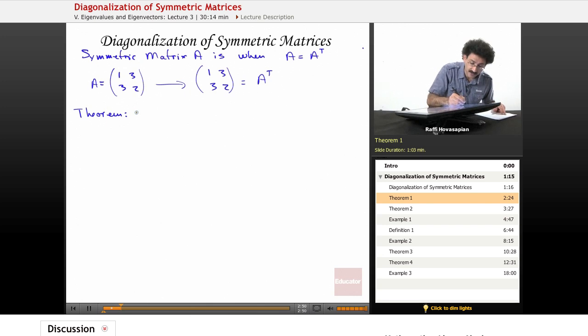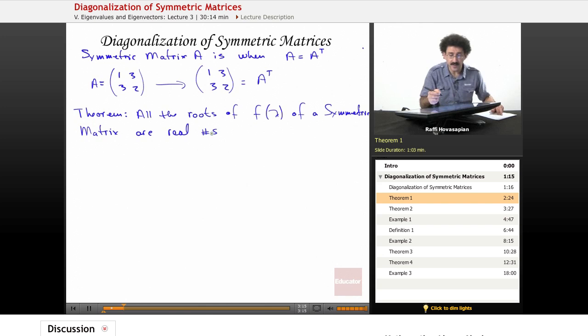Well, as it turns out that all the roots of what we say f of lambda, which is the characteristic polynomial of a symmetric matrix, are real numbers. So as it turns out, if our matrix happens to be symmetric, we know automatically from this theorem that all of the roots are going to be real. So there's always going to be a real eigenvalue.